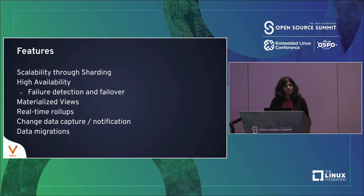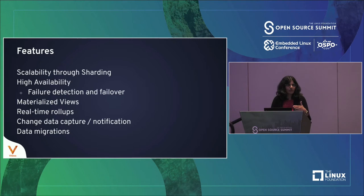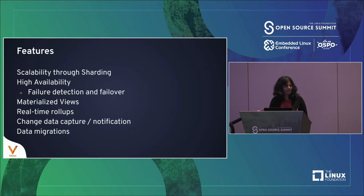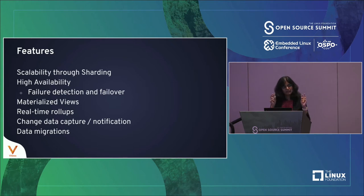VITESS achieves scalability through sharding. You can go vertical — scale up by running on ever larger machines, which eventually hits cost or physical limitations — or you can go horizontal, scale out by adding more and more instances of small or medium commodity hardware. VITESS achieves scalability by hosting different shards on new commodity hardware. High availability is achieved through failure detection and failover: the various shards are run in a primary-replica configuration, and replicas are available to failover to if the primary goes down.